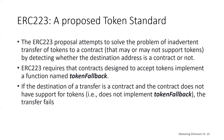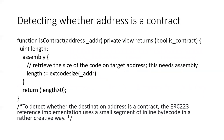To detect whether the destination address is a contract, the ERC-223 reference implementation uses a segment of inline bytecode. You can see the assembly keyword with open and closed curly braces. What this does is retrieve the size of the code at the target address — you can't do that by default in Solidity, so you have to write assembly code. If the length is greater than zero, we know it's a contract.